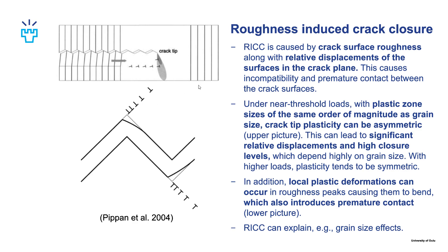Roughness induced crack closure is caused by crack surface roughness along with the relative displacement of the surfaces in the crack plane. If we have two opposing crack surfaces that are rough and one is shifted in relation to the other, this causes incompatibility and premature contact between the crack surfaces.